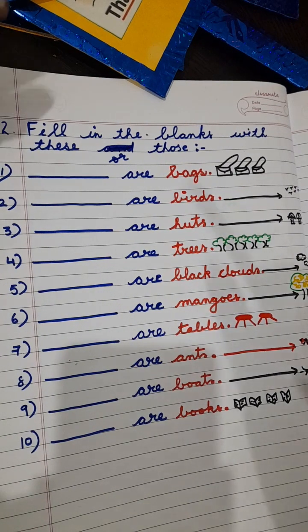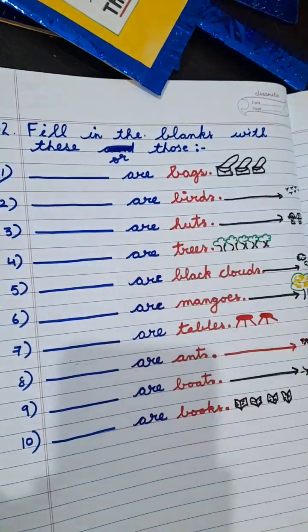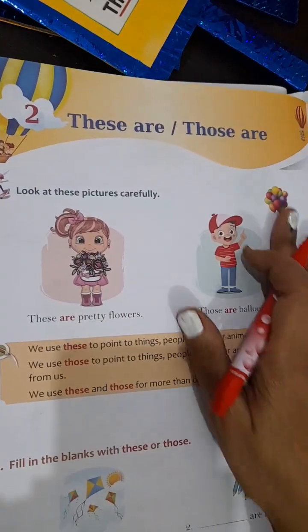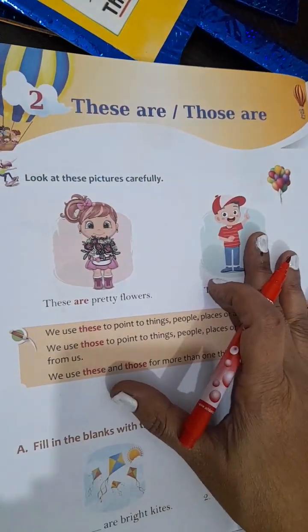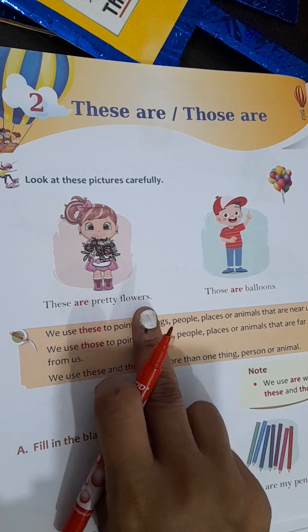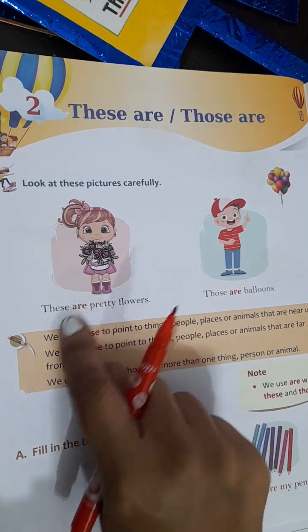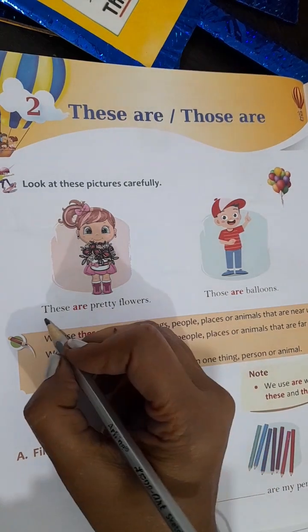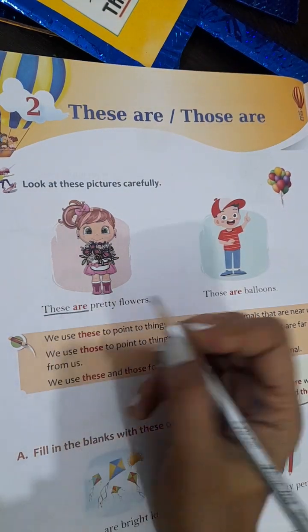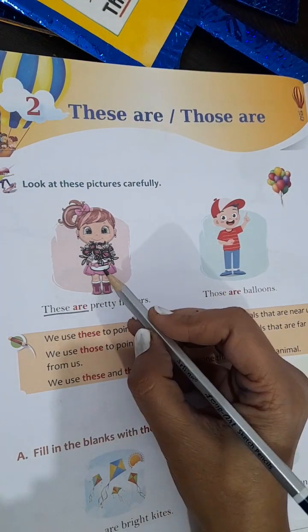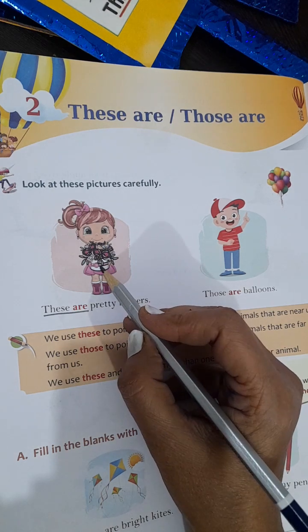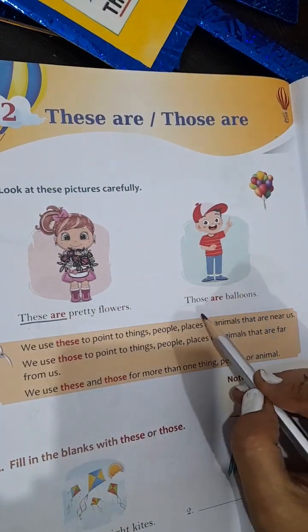Let's see one by one. So yeh 'this' — yeh dekhne se pehle aap ki jo grammar book hai, us mein 'these' aur 'those' ki kya definition hai, woh dekh lete hain. There are two pictures given. 'These are pretty flowers.' Yeh jaam pe 'these' use kiya hai. 'These' use kiya hai kyunki the flowers are in the hands of the girl — yeh jo ladki ke paas hai, flowers. Toh is liye 'these.'